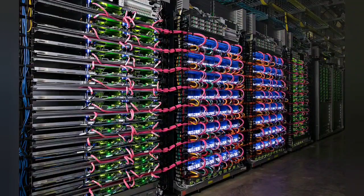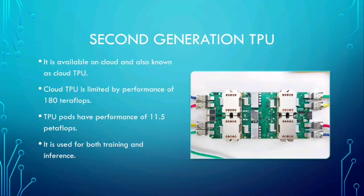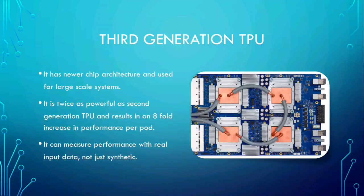There are different types of TPU. The first generation TPU is a hardware chip used at Google data centers for faster computation. The second generation TPU is now available in cloud and empowers businesses everywhere to access this accelerator technology to speed up their machine learning workloads using its high-speed network. The third generation TPU is twice as powerful as its previous generation, resulting in an eight-fold increase in performance.